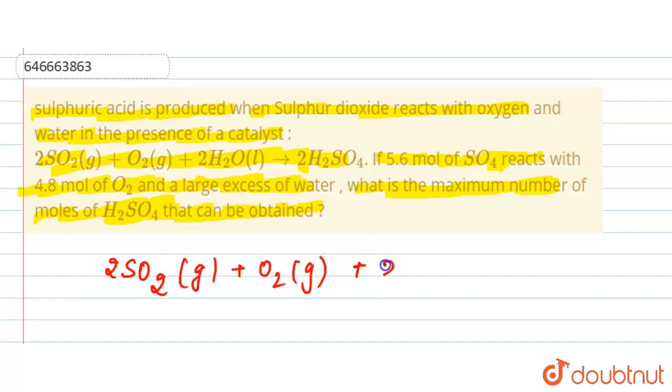gas, here we have 2H2O liquid, and here we have the formation of 2H2SO4. Now here we are given that we have taken 5.6 moles of SO2 and 4.8 moles of O2.